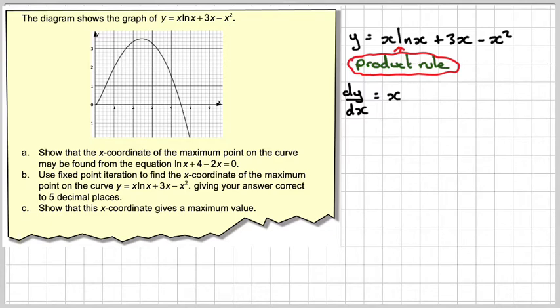That's going to be x times the derivative of ln x which is 1 over x, plus ln x times the derivative of x which is 1. The derivative of 3x is 3. The derivative of minus x squared is minus 2x.